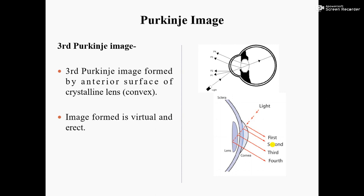The Third Purkinje Image is formed by the anterior surface of the crystalline lens. This is the crystalline lens, and this is the anterior surface. The anterior surface of the crystalline lens is convex in shape. Because of this convex shape, the image formed is virtual and erect.